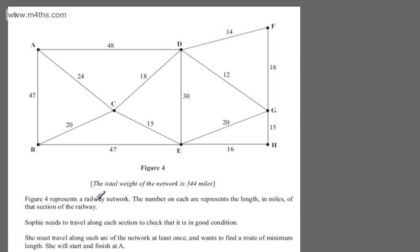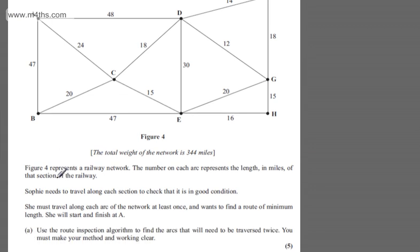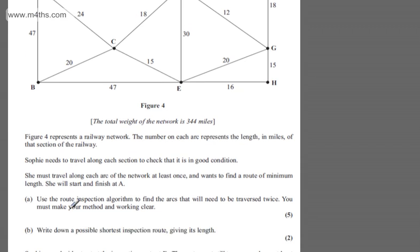This is question number 5. We're told figure 4 represents a railway network. The number on each arc represents the length in miles of that section of the railway. Sophie needs to travel along each section to check that it's in good order. She must travel along each arc of the network at least once and wants to find a route of minimum length. She will start and finish at A. In part A for five marks it says use the route inspection algorithm to find the arcs that will need to be traversed twice. You must make your method and working clear.